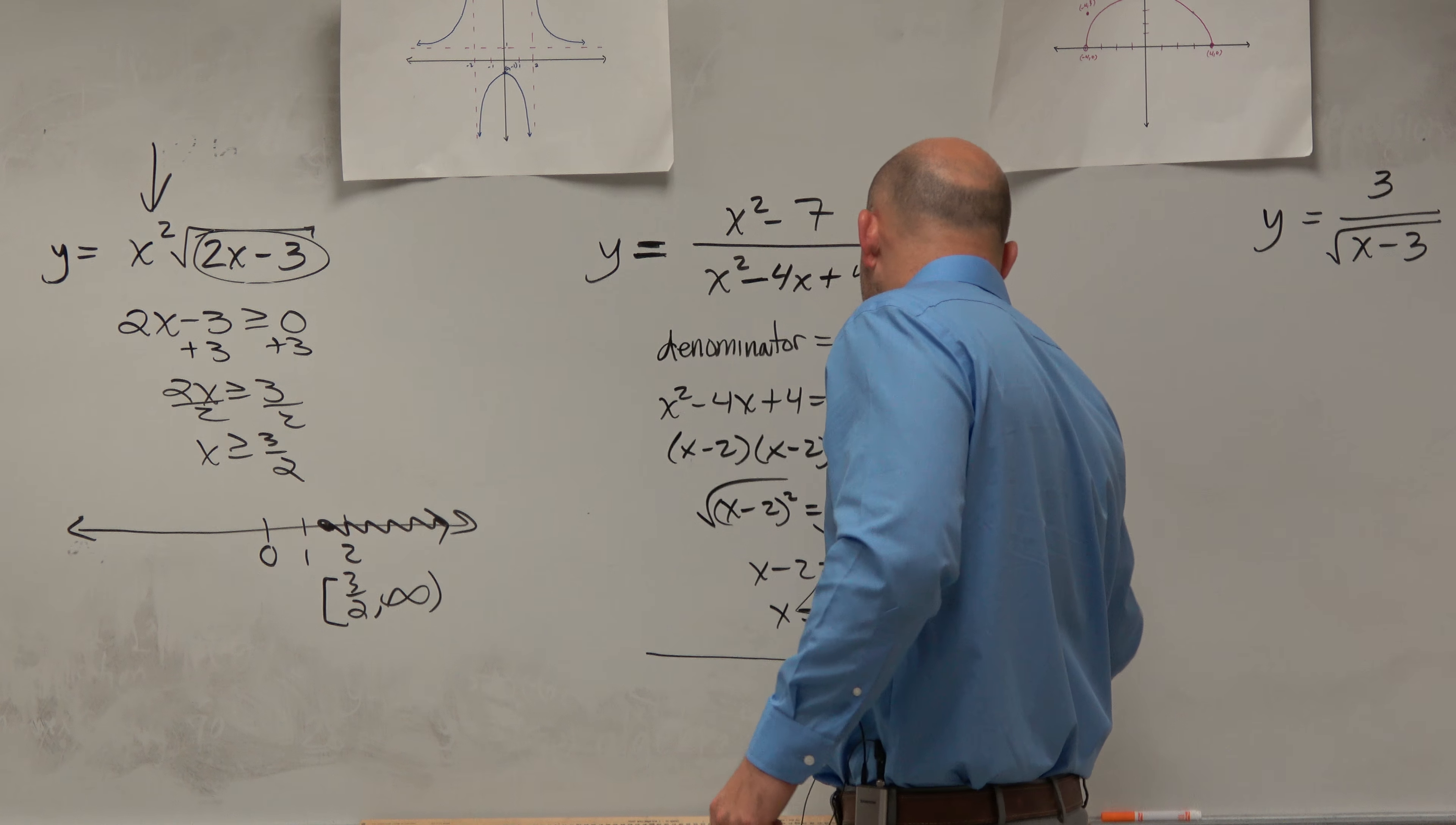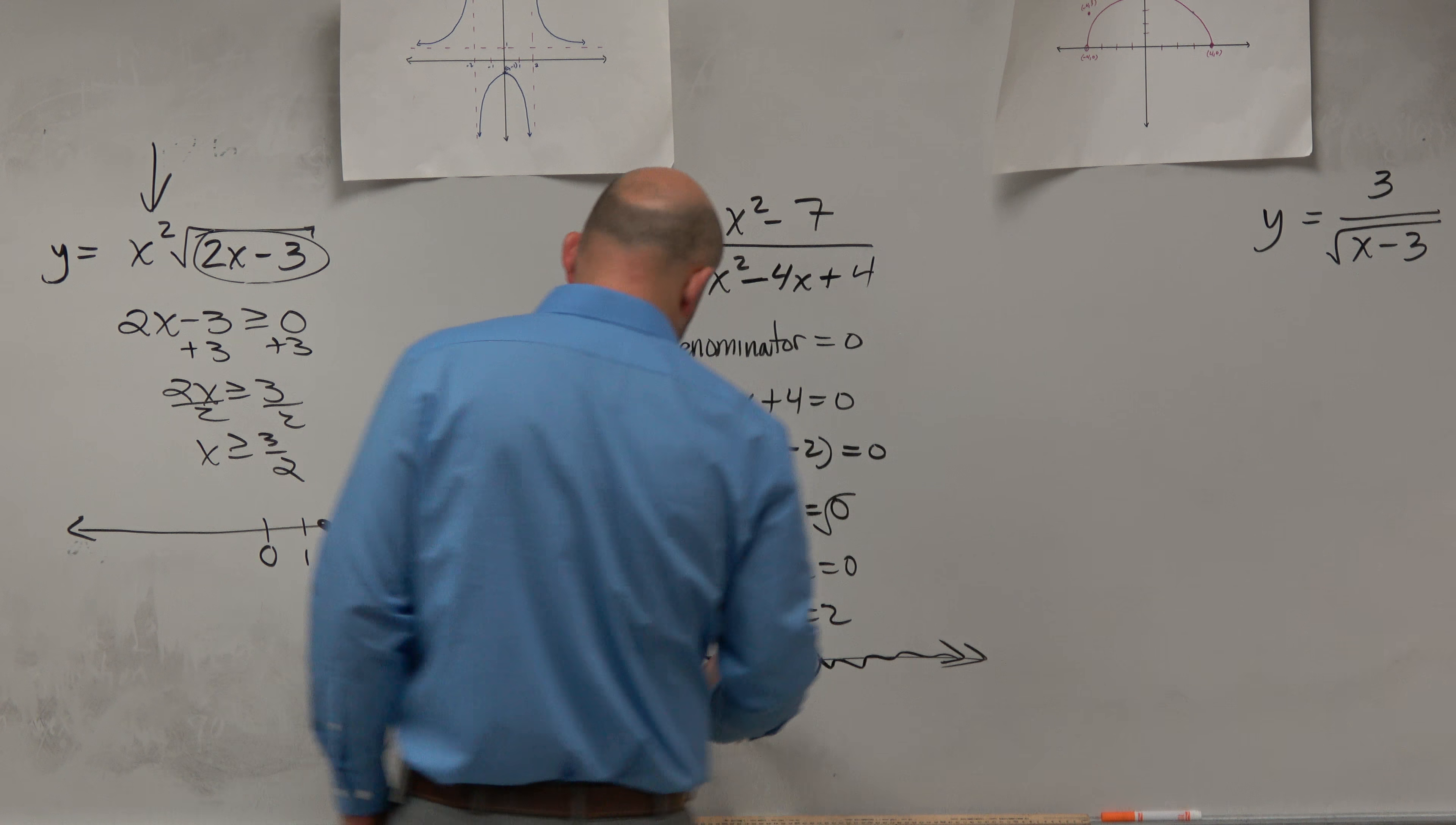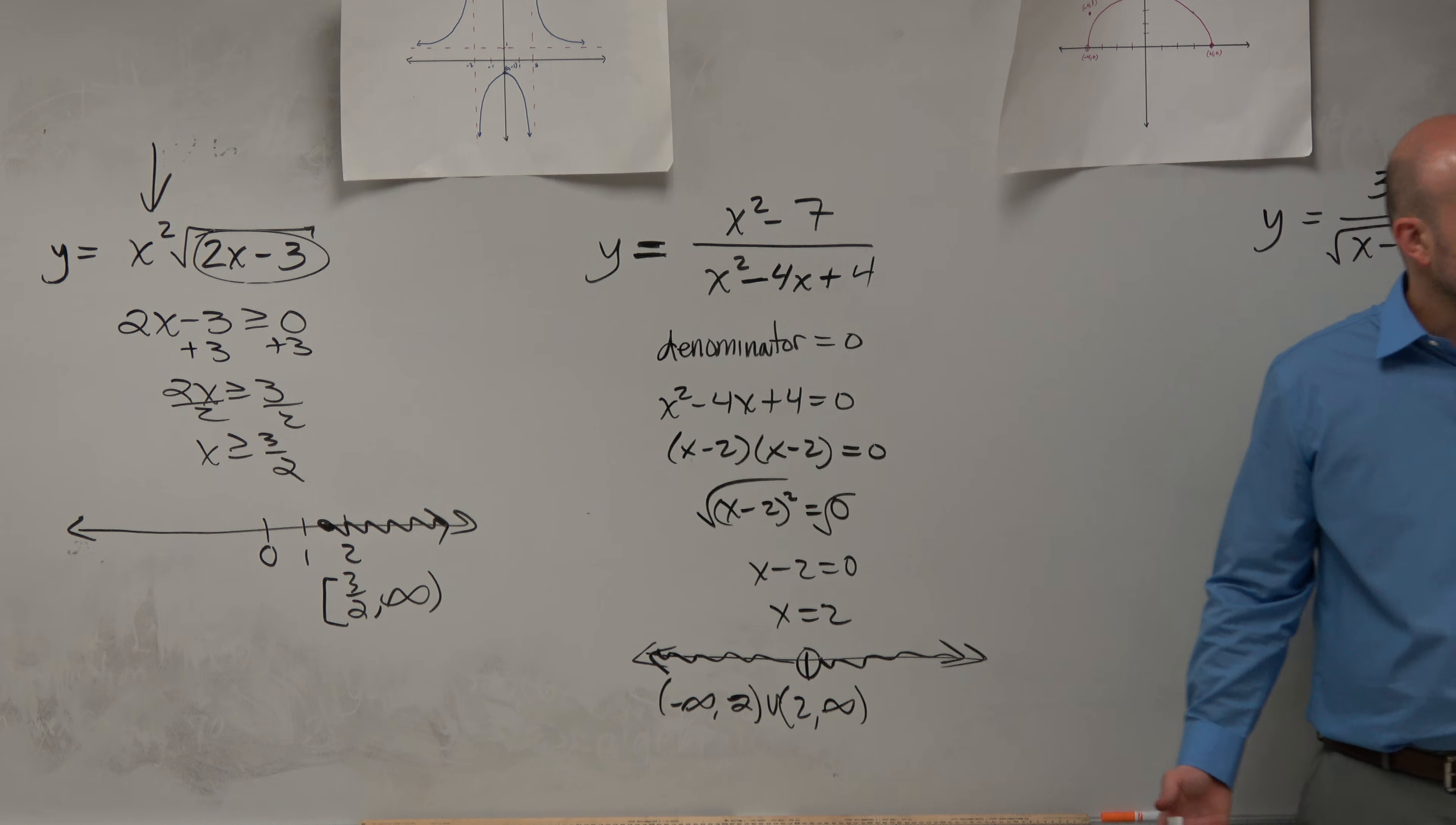So if we want to find the domain, then we say 2 is the only number not in the domain. That's an open circle. That means the domain is all other numbers. So if I need to write my domain, I would say negative infinity to 2, union 2 to infinity. You don't need to use a union, but do you guys see how we can connect those?